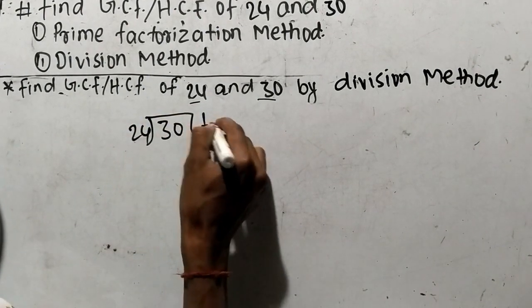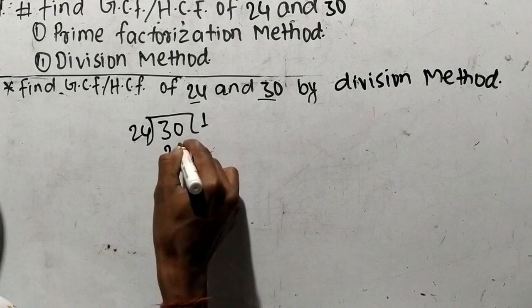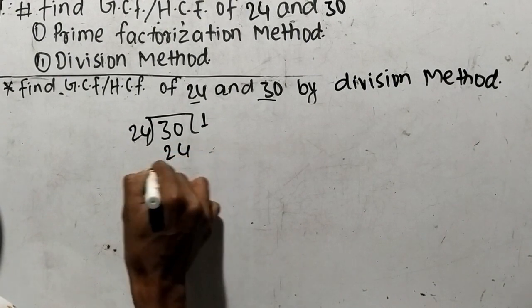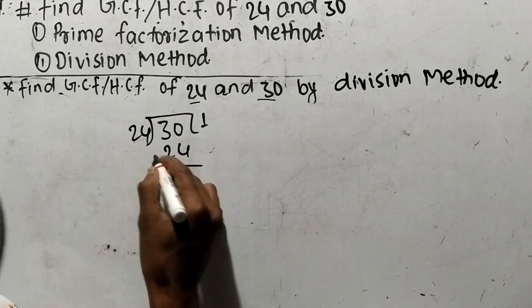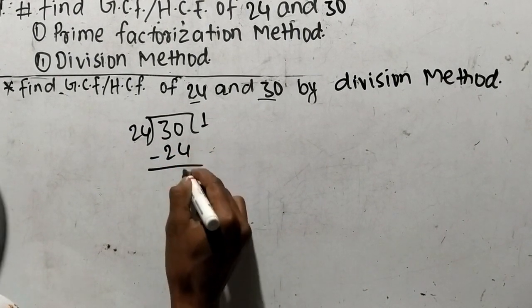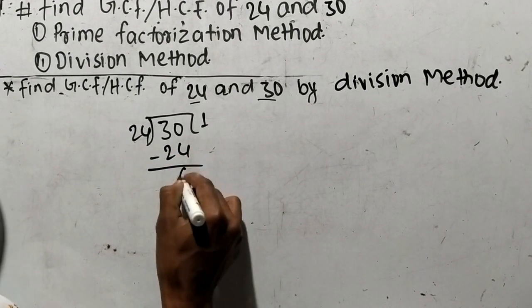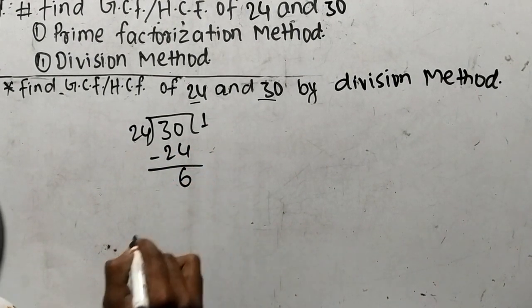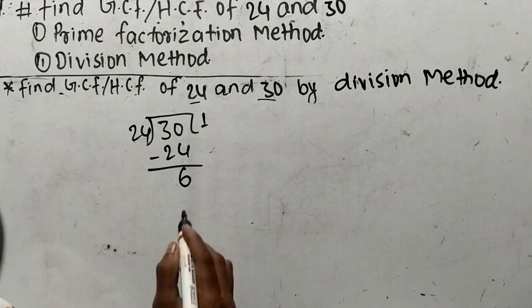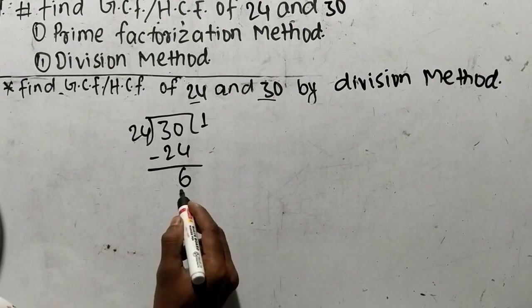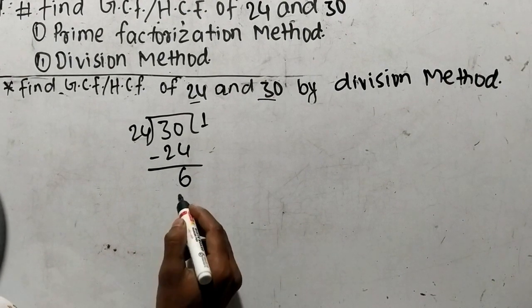So 24 x 1 = 24. Then 30 minus 24 = 6, so here we have remainder 6.